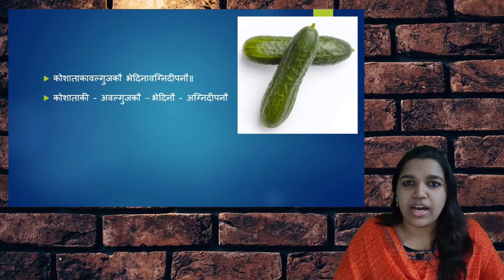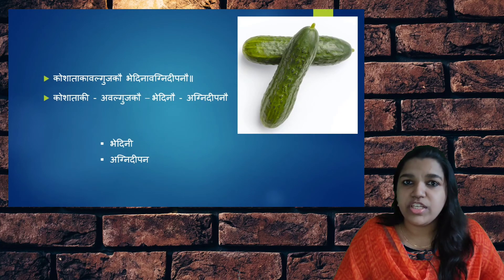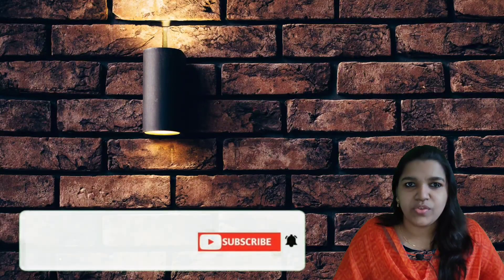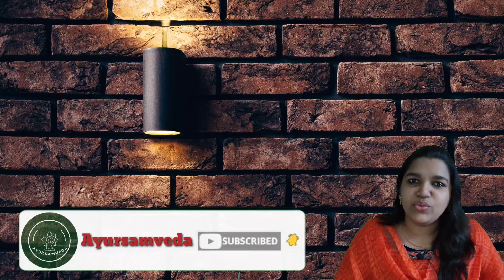Koshataki and Avalguja are having the properties such as Bhedini, that is laxative or purgative, and Agni Deepana, that is it helps in increasing the Agni Deepti. That's how we have done a portion of Shaka Varka from Ashtanga Hridaya Sutrasthana 6th chapter and will be continuing the same chapter in the next videos. For more updates on Samhita, make sure you subscribe the channel. Thank you, see you in the next video. Till then, bye.